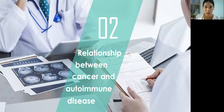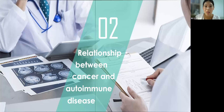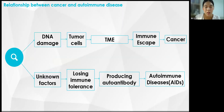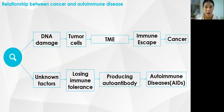DNA damage leads to the appearance of abnormal cells, which proliferate and develop into tumor cells. These in turn form a tumor microenvironment (TME) around the tumor cells to protect them from the surveillance of the human immune system — what we call immune escape — and finally become cancer.